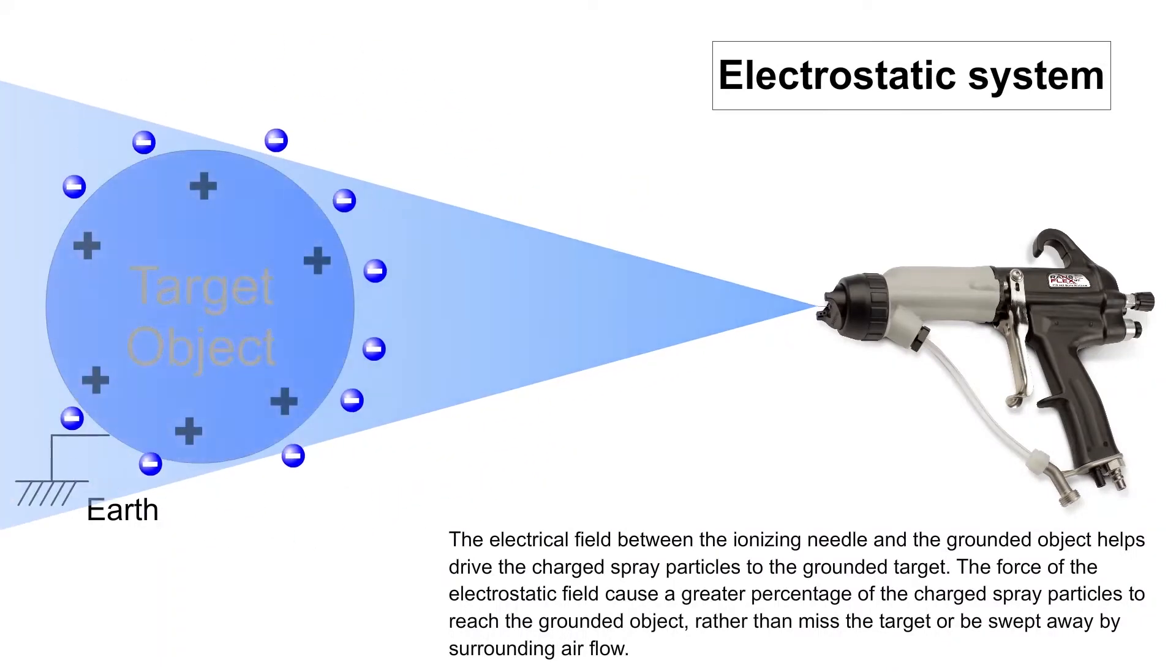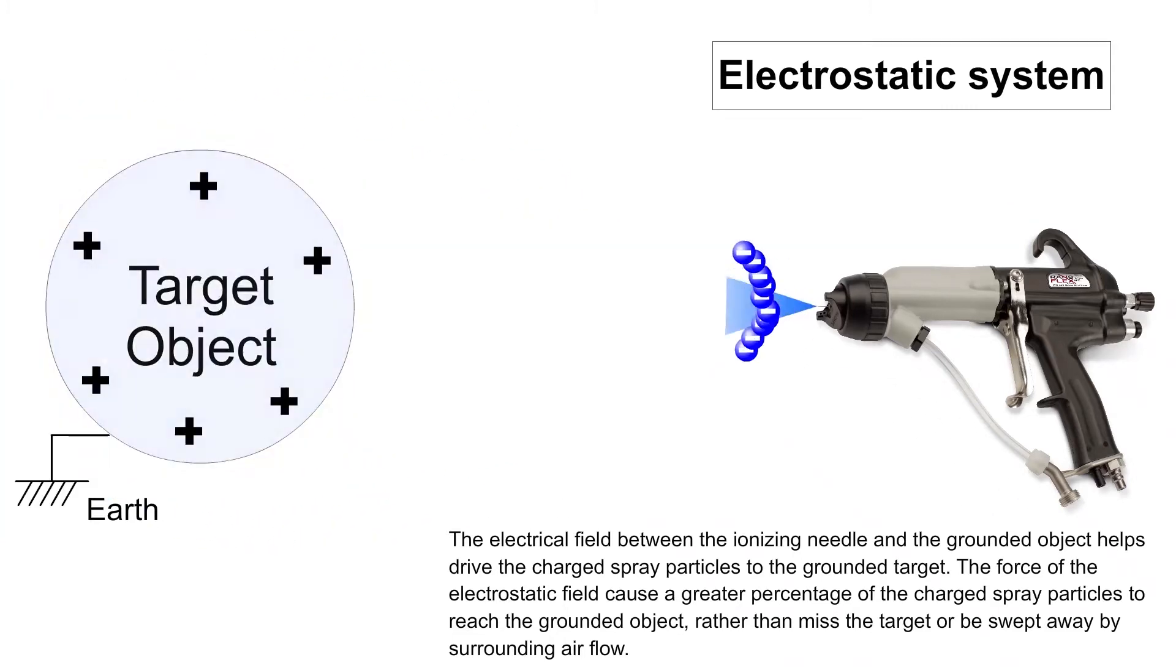In electrostatic finishing, the workpiece being coated is grounded and negative high voltage is generated at the applicator. This creates an electrostatic field between the workpiece and applicator.